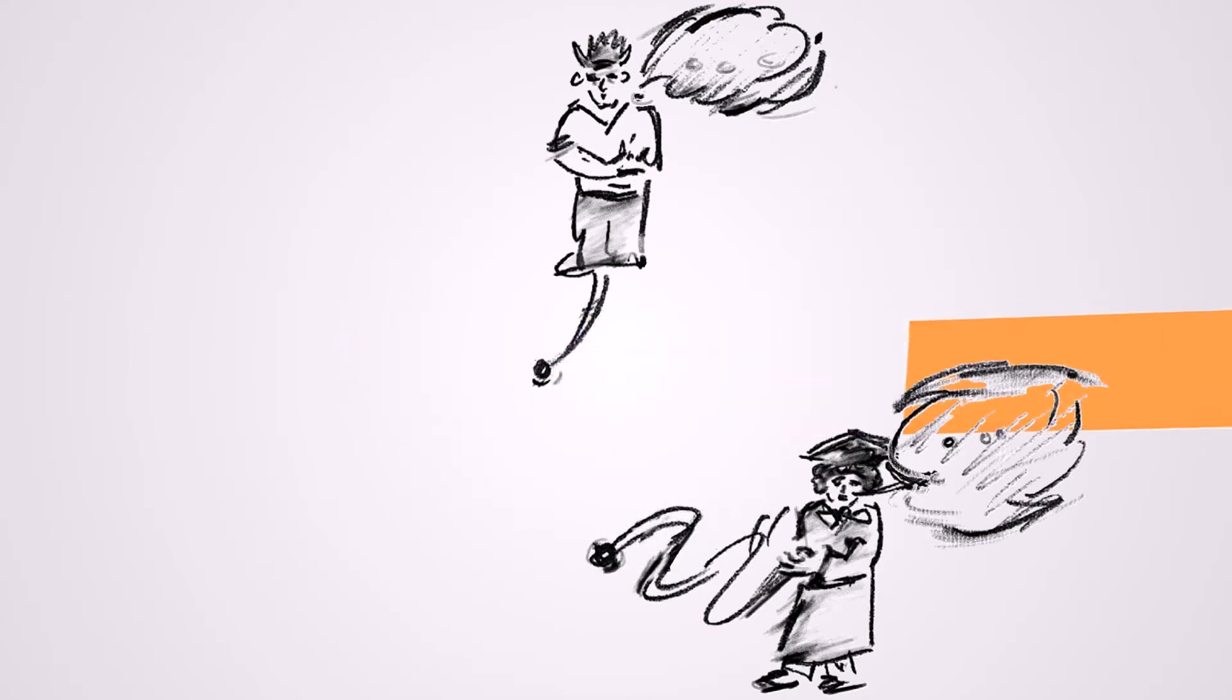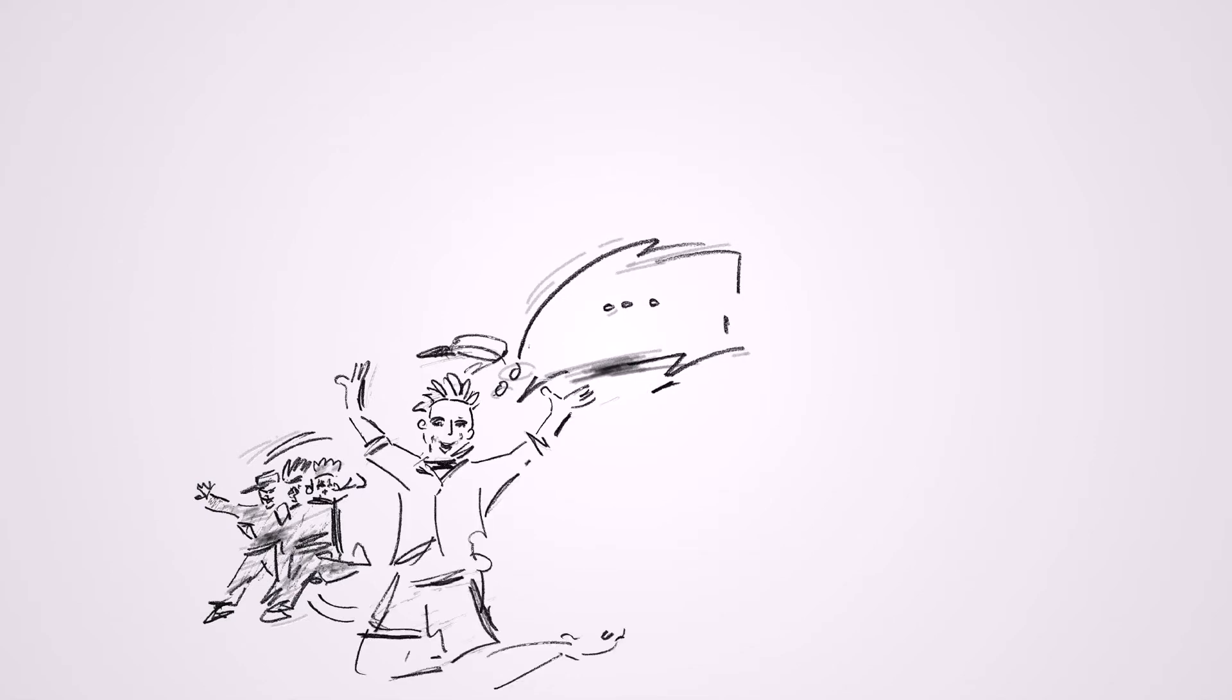But geography isn't the only means by which a variety can develop. A variety can develop whenever a community forms and differentiates itself from others.